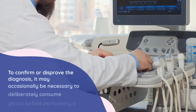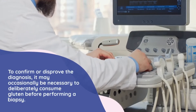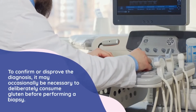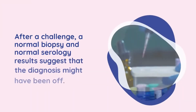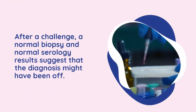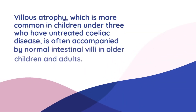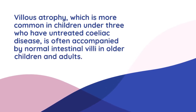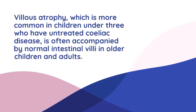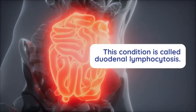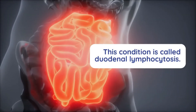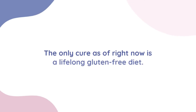To confirm or disprove the diagnosis, it may occasionally be necessary to deliberately consume gluten before performing a biopsy. After a challenge, a normal biopsy and normal serology results suggest that the diagnosis might have been off. Villus atrophy, which is more common in children under 3 who have untreated celiac disease, is often accompanied by normal intestinal villi in older children and adults. This condition is called duodenal lymphocytosis.